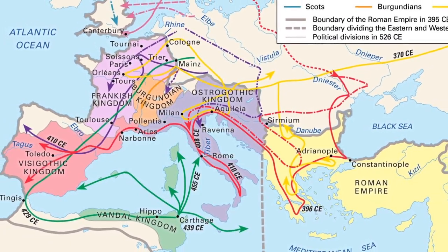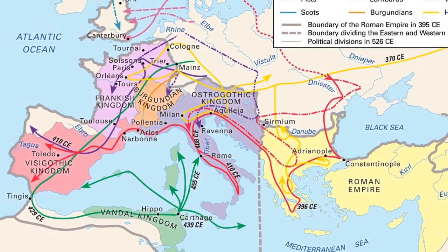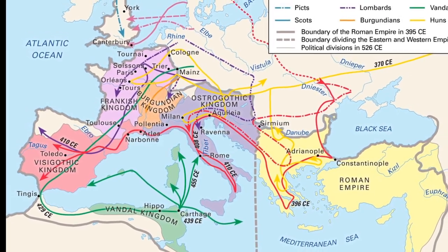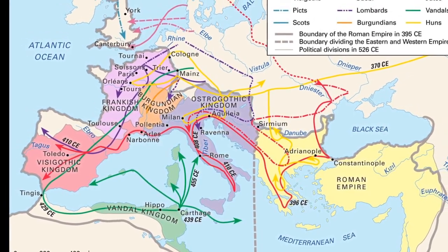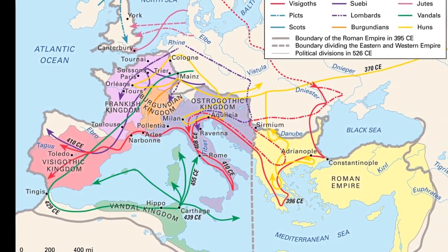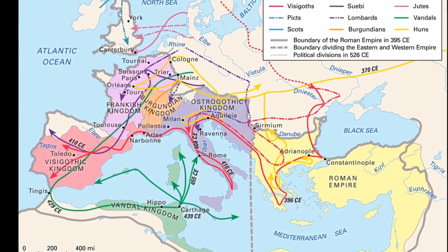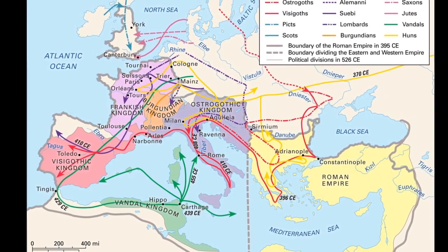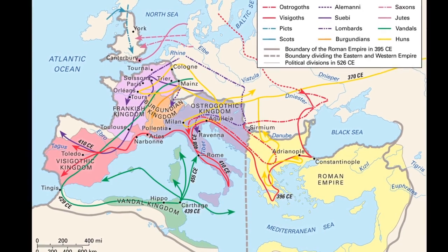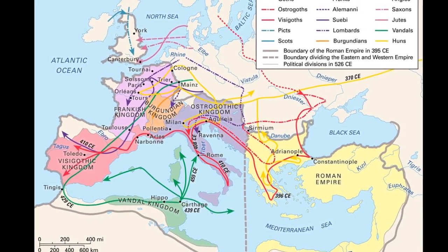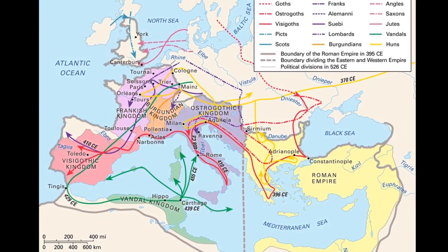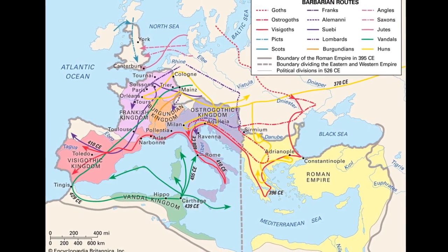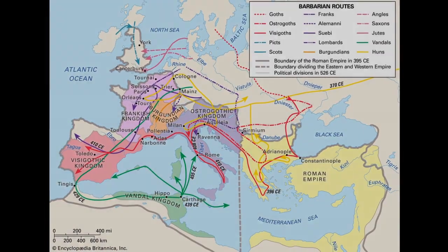Sometimes this process is slow, like with the bad blood that's slowly built up between France and the Holy Roman Empire, and other times that process is fast, like with the divergence between Ptolemy Egypt and Seleucid Persia. In the latter case, the two nations were really only unified briefly, and so even though their rulers were both Greek in culture, the nations quickly reverted back to their old ways.